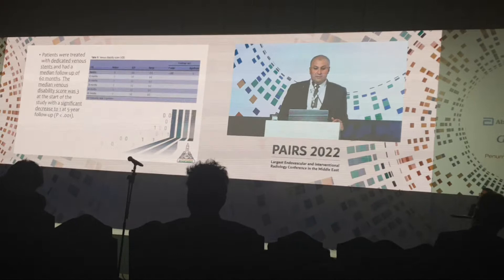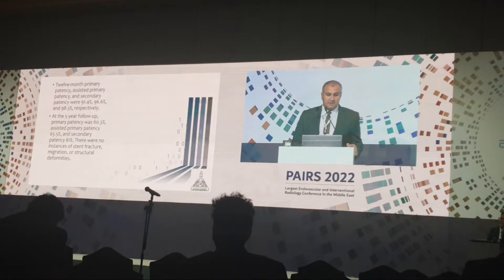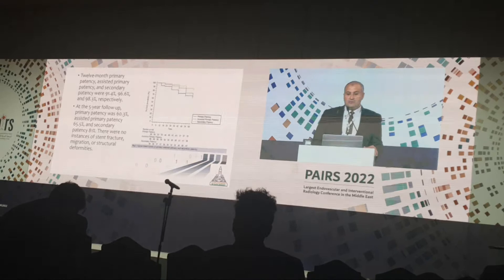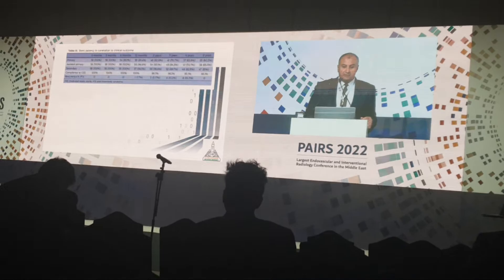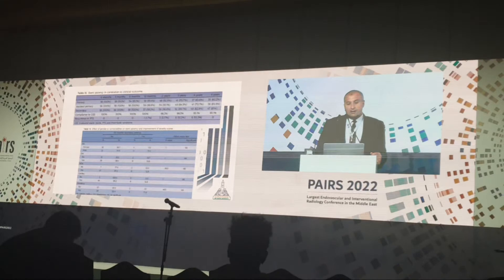At 12 months, primary patency, assisted primary patency, and secondary patency were 91%, 96%, and 98% respectively. At the 5-year follow-up, primary patency was 60%, assisted primary patency was 65%, and secondary patency was 81%, according to Kaplan-Meier analysis.